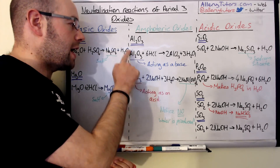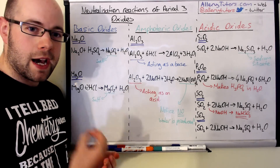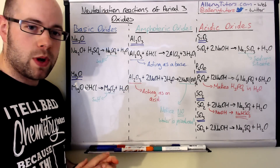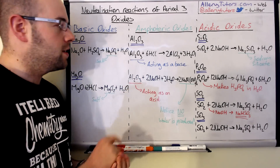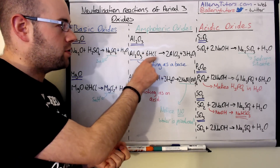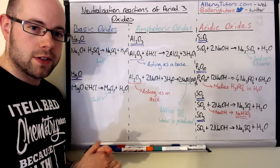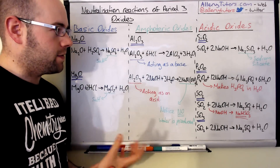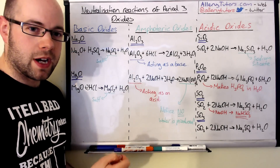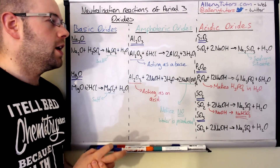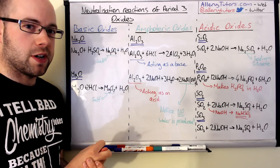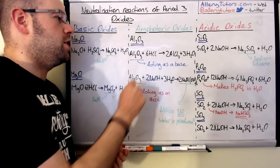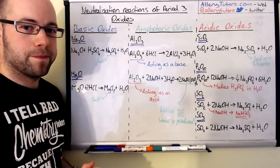First, aluminium oxide reacting as a base: if we take Al₂O₃ reacting with an acid — for example hydrochloric acid — we form the salt aluminium chloride. If it were sulfuric acid, it would be aluminium sulfate instead. Just watch out carefully for those reactions, and you also produce water.